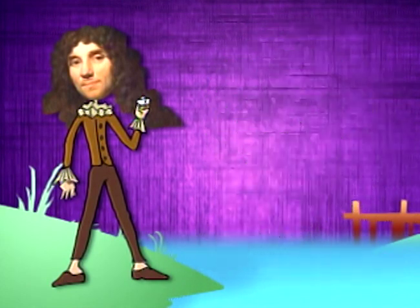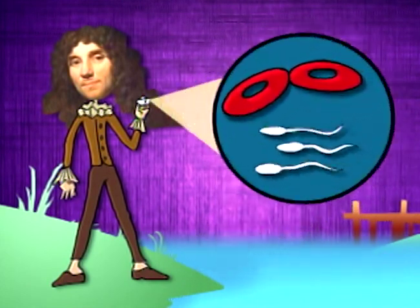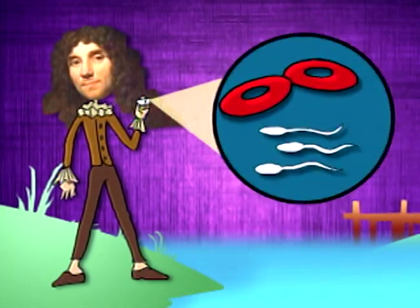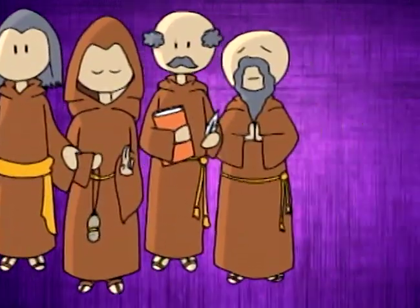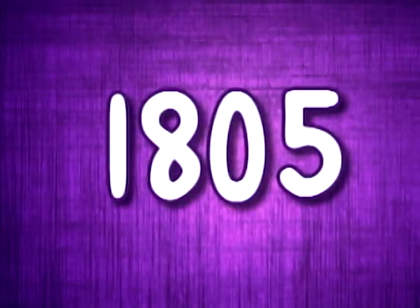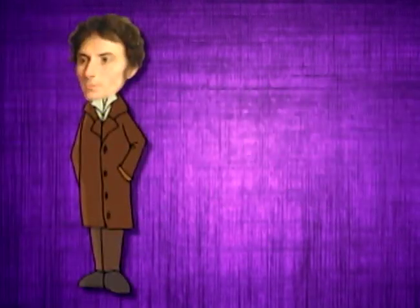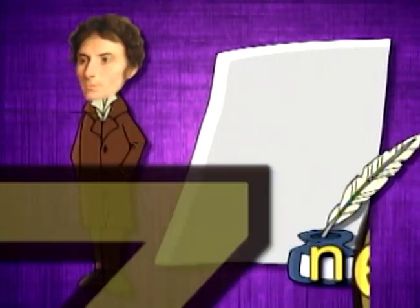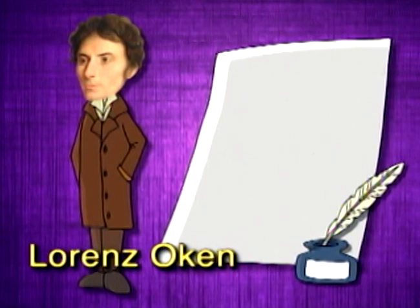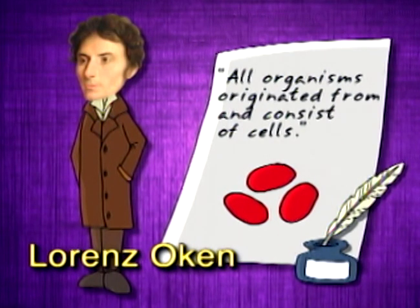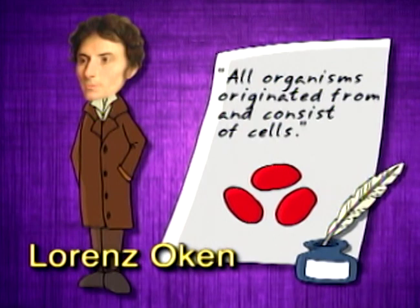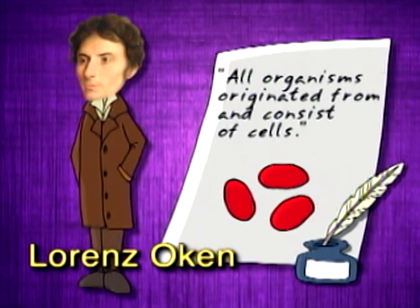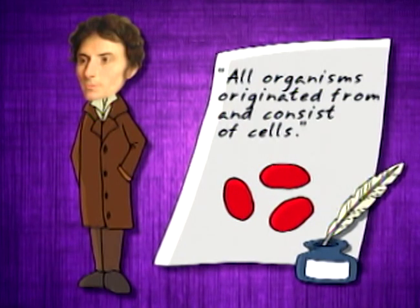He also reported his observations of blood cells and sperm cells. In 1805, German naturalist Lorenz Oken postulated that all organisms originated from and consist of cells. This became the initial statement of the modern cell theory.